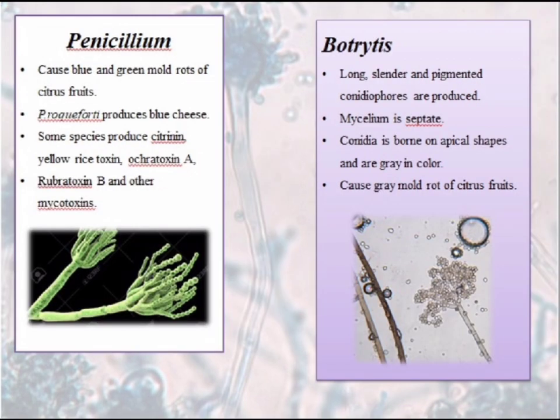Next is Penicillium. It causes blue and green mold rots of citrus fruits. Penicillium roqueforti produces blue cheese. Some species produce citrinin, yellow ochratoxin, ochratoxin A, rubratoxin B and other mycotoxins. Penicillium is a well-known source of a very powerful antibiotic known as penicillin.